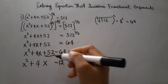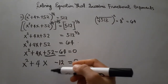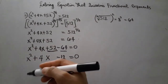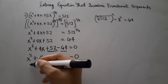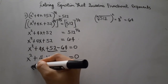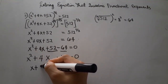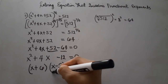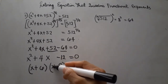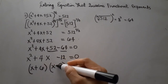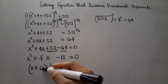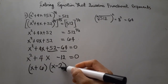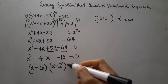The next step is to factor this expression. Since I have a lesson on factoring polynomials, you can check that for reference. Factoring x squared plus 4x minus 12: we get (x plus 6)(x minus 2). Because 6 times x is 6x, x times negative 2 is negative 2x, and 6x minus 2x is positive 4x. Also, 6 times negative 2 is negative 12.